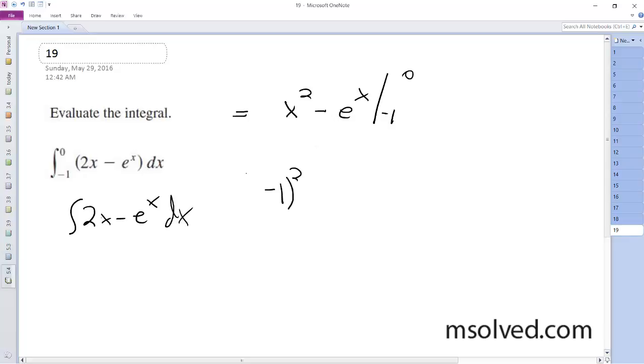So we get negative 1 squared minus e to the negative 1, and we end up with... oh, I made a mistake.